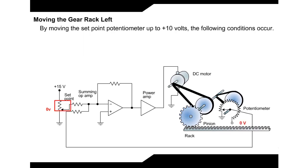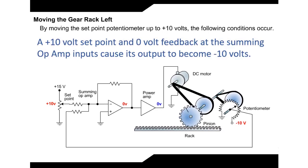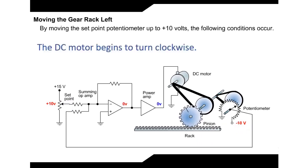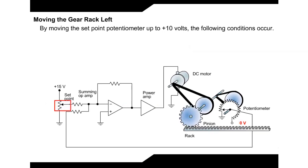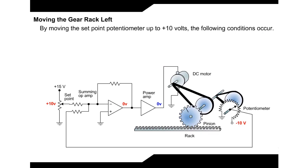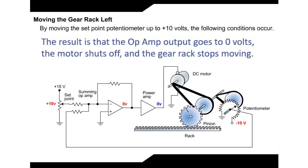Moving the gear rack left: By moving the set point potentiometer up to positive 10 volts, the following conditions occur. The feedback signal is 0 volts. A positive 10 volt set point and 0 volt feedback at the summing op-amp inputs cause its output to become negative 10 volts. The power amp amplifies and inverts its input to a positive output. The DC motor begins to turn clockwise. The rack is forced to move left. The feedback potentiometer's wiper rotates in the clockwise direction and as it does, it provides a negative feedback signal that increases from 0 volts. When the wiper arm of the feedback potentiometer reaches the negative 10 volt position, it cancels out the positive 10 volts applied to the top input of the summing op-amp. The result is that the op-amp output goes to 0 volts, the motor shuts off, and the gear rack stops moving.